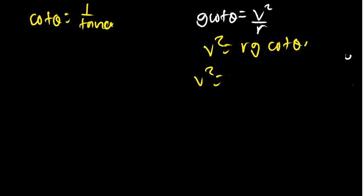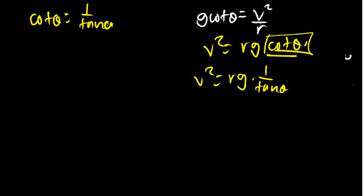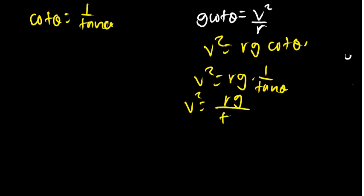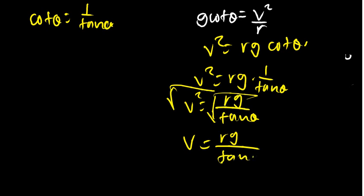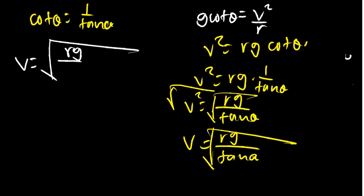The reason we replace cot with 1 over tan theta is because cot is not available on a calculator. So v squared equals rg divided by tan theta. Taking the square root of both sides: v equals the square root of rg over tan theta. This is the formula that gives us how fast an object is moving inside the funnel.